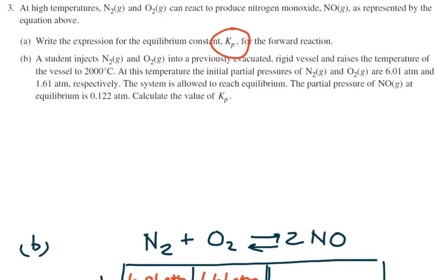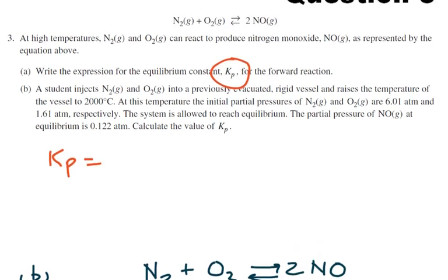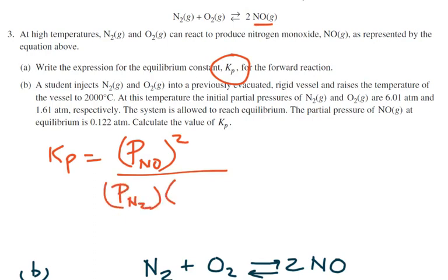Writing Kp is actually a pretty easy thing to do, but we noticed that across the nation what students did is they wrote Kc — the concentrations — using brackets, and they got in trouble. So for Kp, you do the partial pressure of NO, the product. It's still products over reactants, raised to the powers of their coefficients, but everything is partial pressures: partial pressure of N₂ times the partial pressure of O₂. Some people did concentrations rather than partial pressures.